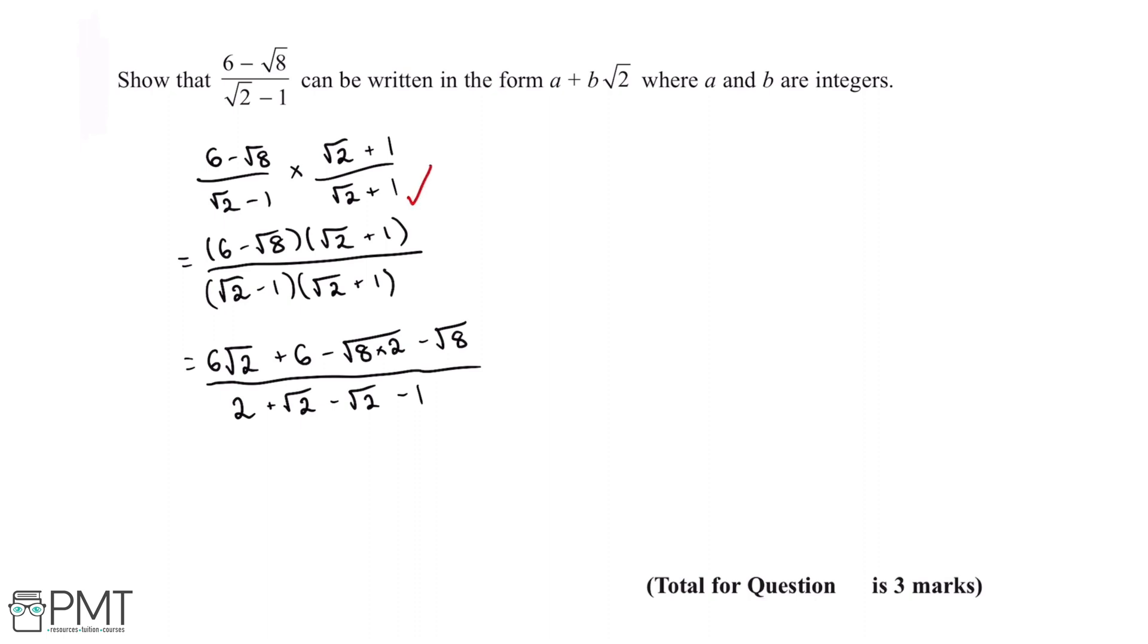The next thing we'll need to do is simplify this fraction down. So we can start off with the numerator. The first thing we can simplify down is this negative √8 multiplied by √2, and this gives us 6√2 + 6 - √16 - √8.